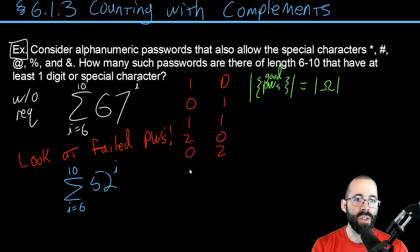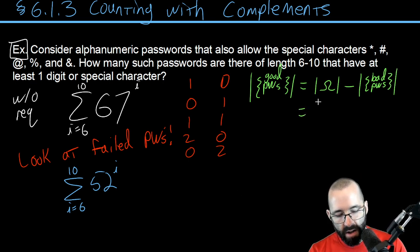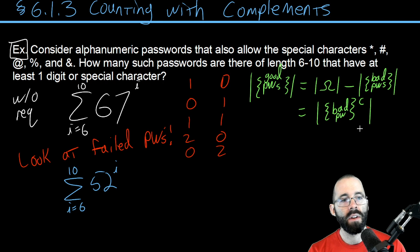And what we're doing is we're just finding the size of the domain of discourse, the size of all passwords with or without the requirement, and we're just subtracting out the bad ones—subtracting out the size of the bad ones. Or if you want to think about it, this is also just looking at the bad passwords complement.